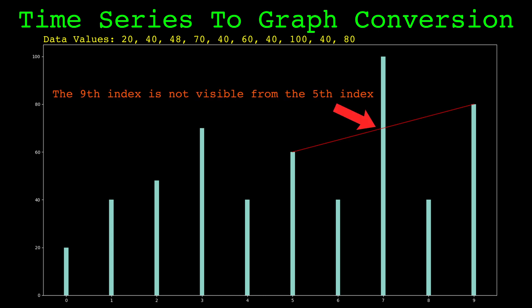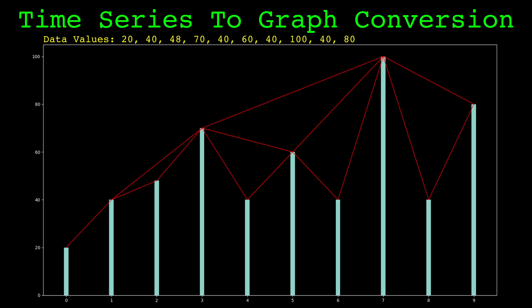The line of sight between the bars on the fifth and ninth index is interrupted by the bar on the seventh index, so there will not be a link between their corresponding nodes on the visibility graph. Here is every uninterrupted line of sight involving the bar on the fifth index. And here is every uninterrupted line of sight for all the bars.